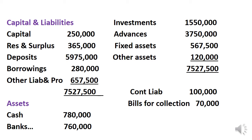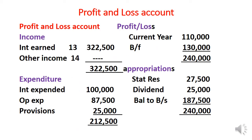Profit and Loss Account: Income — Interest and Discount (Schedule 13): 3,25,000 less Rebate 2,500 = 3,22,500. Other Income (Schedule 14): 1,000. Expenditure — Interest Expenditure (Schedule 15): 1,00,000. Operating Expenses (Schedule 16): 87,500. Provision for Bad Debts: 25,000.